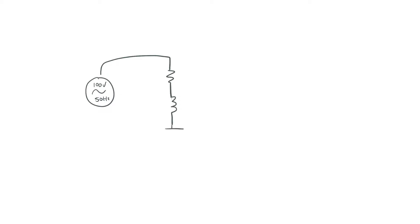Let's get started. We've got an AC supply: 100 volts, 50 hertz. Then we're going to have a resistor, an inductor, and a capacitor. We'll give the resistor 4 ohms — a very small resistor — mostly because I want to show you the impact of what resonance can have in terms of the high voltages that could come from just 100 volts. Let's go with a 500 millihenry inductor, and then we're going to put a variable capacitor.